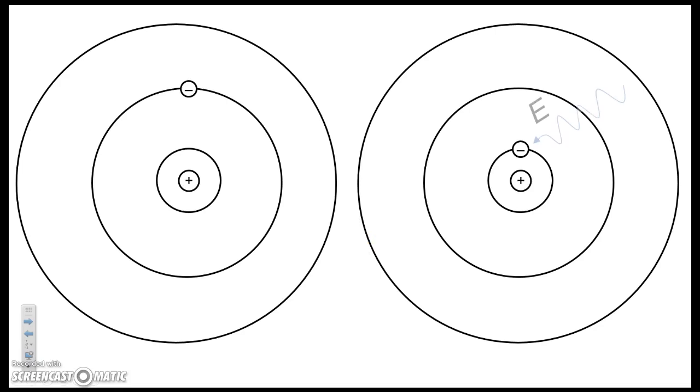So what if we take a blue photon with even more energy than the orange? In this case, the blue photon has enough energy to get the electron all the way up to the second orbit, and so the blue photon will get absorbed.